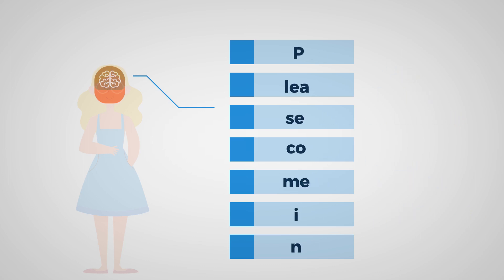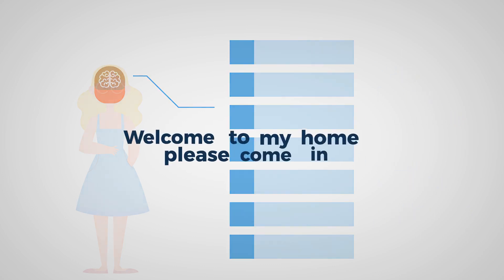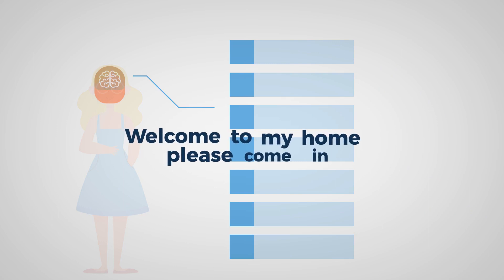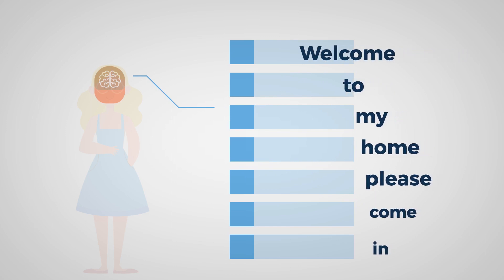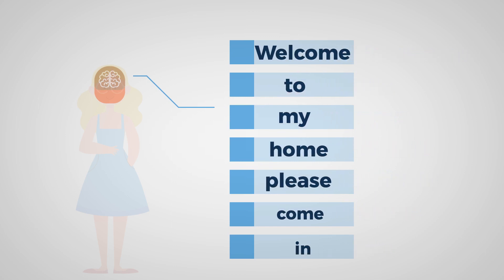As a learner progresses in the language and learns more vocabulary and grammar, she can use words and phrases as chunks instead of just sounds. Rather than only being able to hold seven sounds in her short-term memory, now she can hold seven words or small phrases.